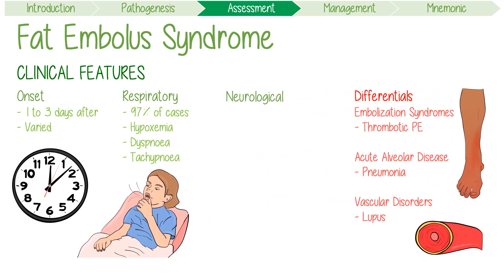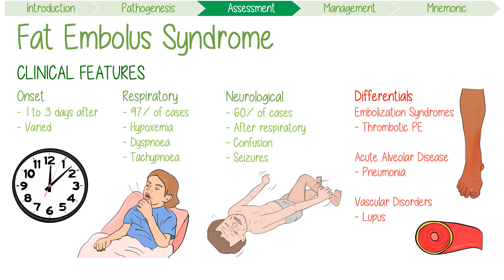Neurological abnormalities are common, occurring in about 60% of cases. They usually start after respiratory distress and include features ranging from confusion and altered levels of consciousness to seizures.